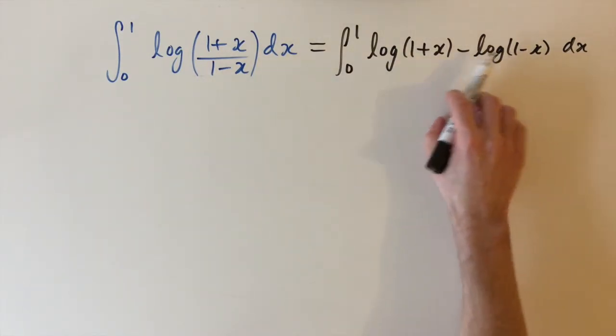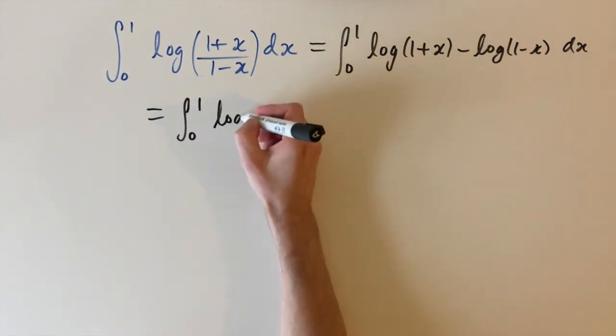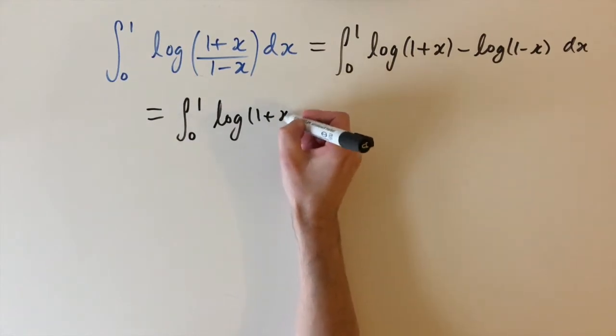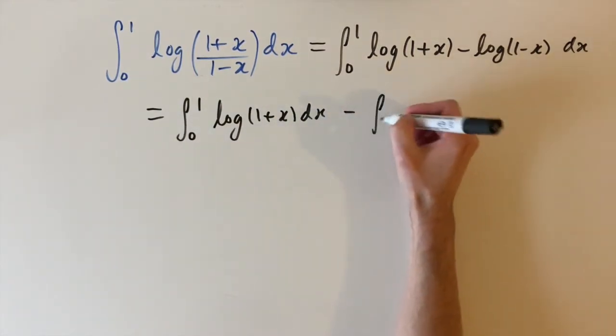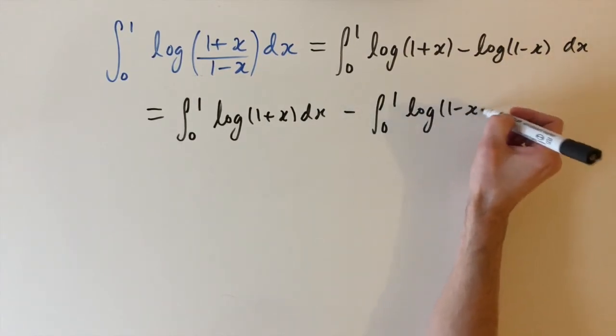So first we're going to split this into two integrals. We have integral between 0 and 1 of logarithm of 1 plus x dx minus the integral between 0 and 1 of log of 1 minus x dx.